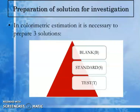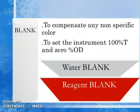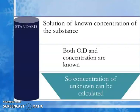Preparation of solutions for investigation in colorimetric estimation: three solutions are required — blank, standard, and test. A blank compensates for any non-specific color and sets the instrument to 100% transmittance and 0 OD; it may be a water blank or reagent blank. A standard is a solution of known concentration where both OD and concentration are known, allowing the unknown concentration to be calculated. A test solution is prepared by treating a specific volume of the test sample with reagents as per the prescribed procedure.